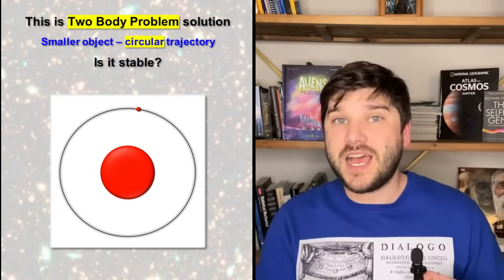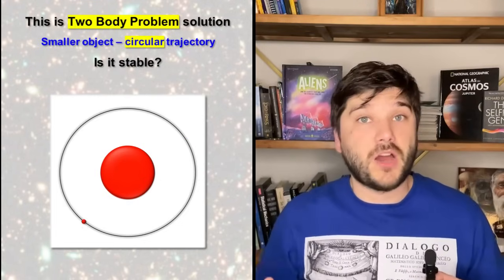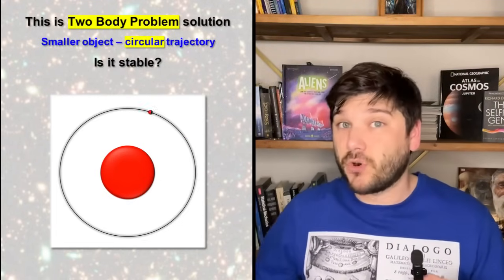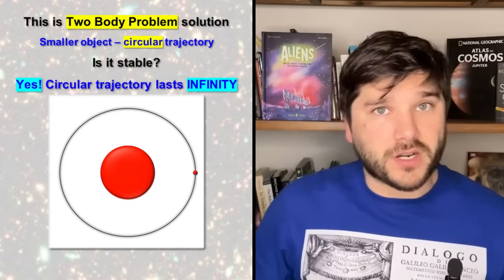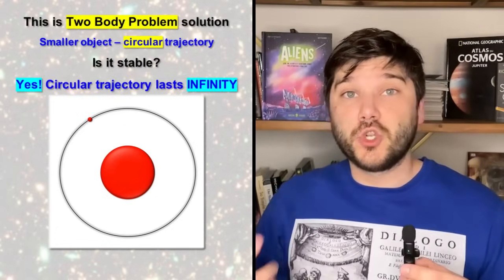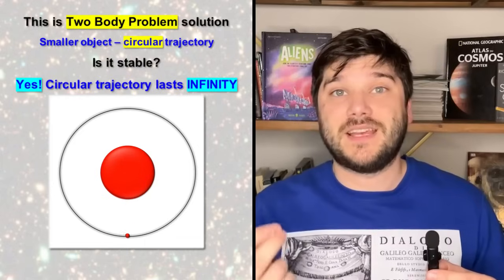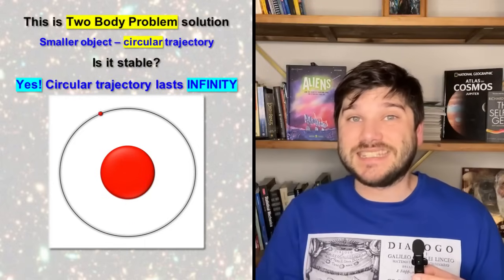The important question now is how stable or how permanent this trajectory is in two-body problem? The answer is it is very stable. Therefore, we can conclude that the solution of two-body problem is a circular trajectory which persists infinitely long in time.